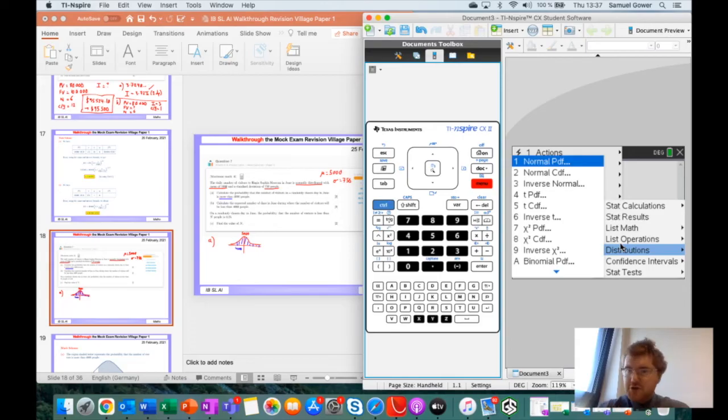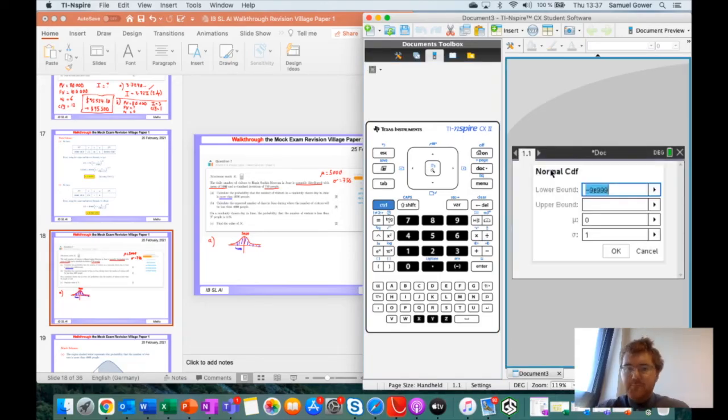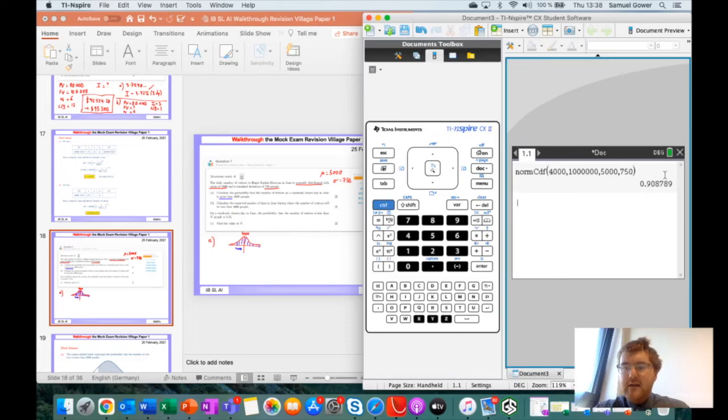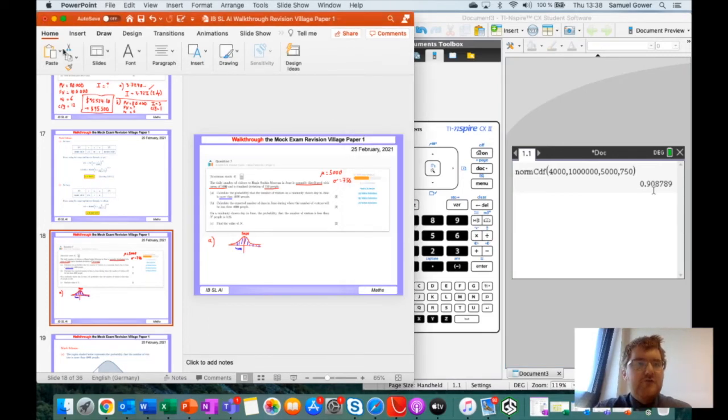Because we're looking for more than, we're going to be using norm cdf. If you're looking for a specific value, you use norm pdf. For question a, let's go to menu, statistics, distributions, and normal cdf. The lowest bound is 4,000. The upper bound is going to go off to infinity, so I'm going to write a million. Mu is 5,000 and sigma is 750. We click ok.